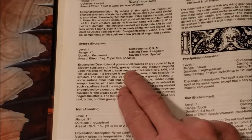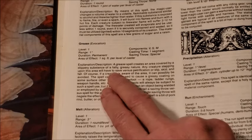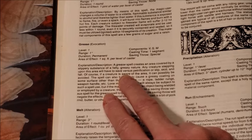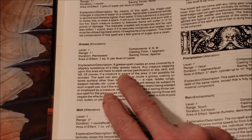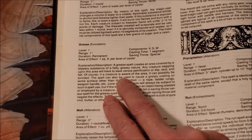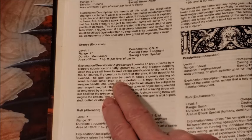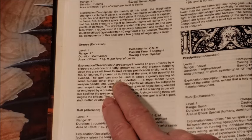A Grease spell creates an area covered by a slippery substance of a fatty, greasy nature. Any creature stepping upon this area will have to save versus petrification or slip, skid, and fall. Of course, if a creature is aware of the area, it can possibly be avoided. The spell can be used to cause a greasy coating on some surface other than that underfoot: a rope, ladder rungs, a weapon handle, etc.